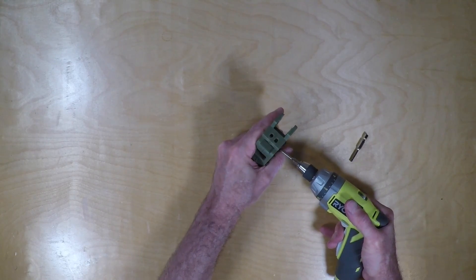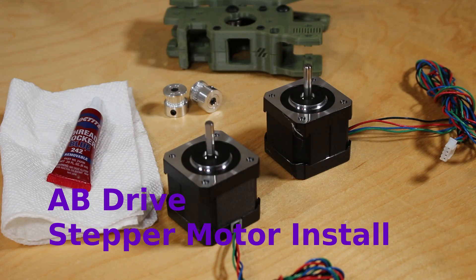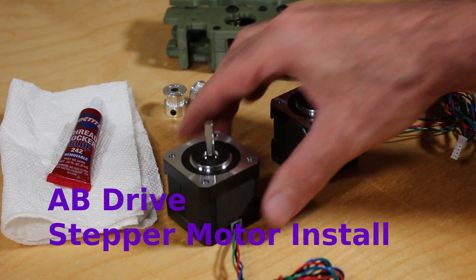And once complete, construct the second unit as well. Next, we need to install the stepper motors on the AB drive units. So you'll need some Loctite for this.